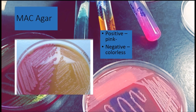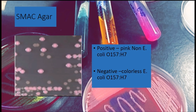Next we have the MacConkey agar plate. The positive result is the pink color on the left side, and on the right is the negative. There's also a background photo of a MacConkey plate streaked by my lab partner. The MacConkey agar plate is used to determine lactose production, similar to the EMB plate.